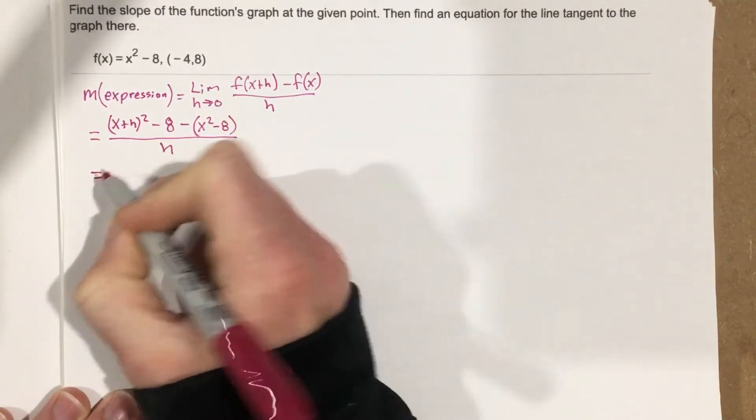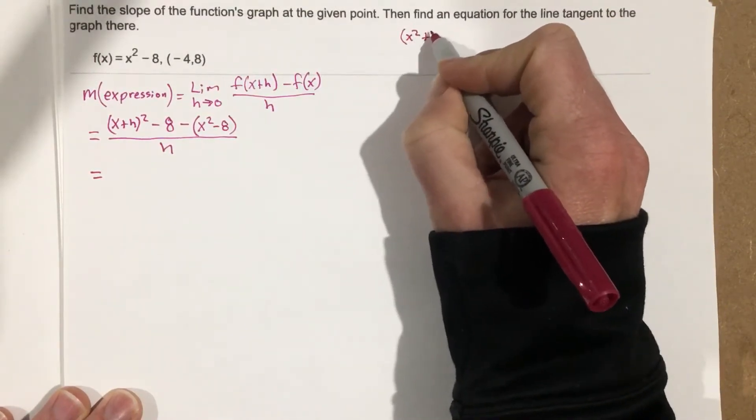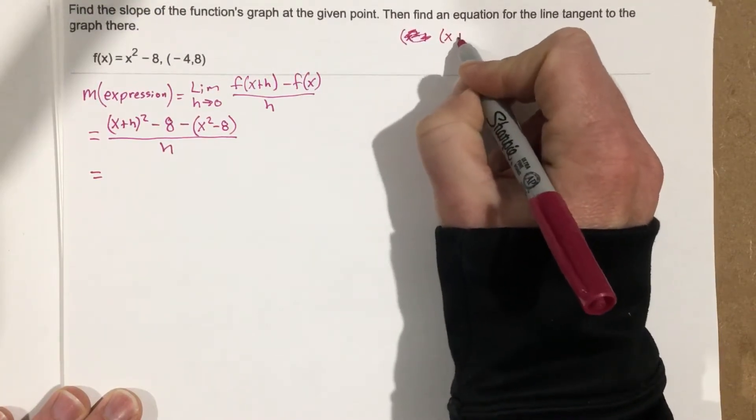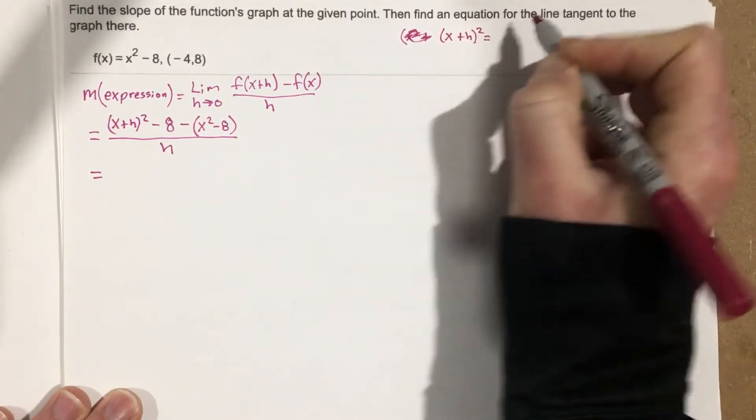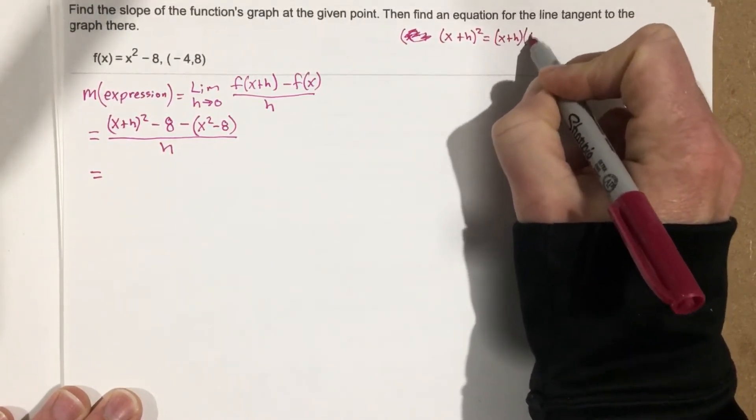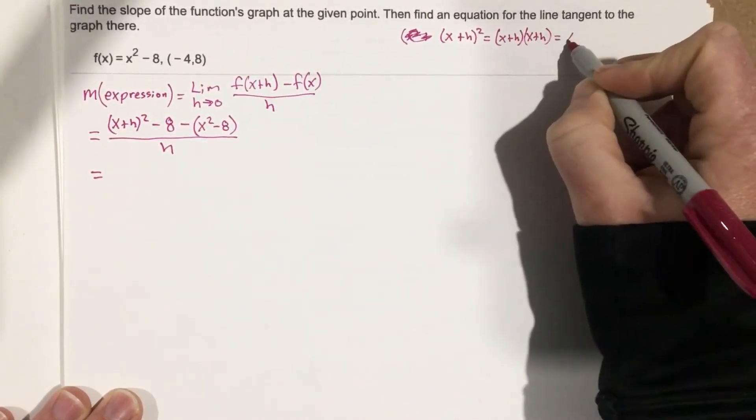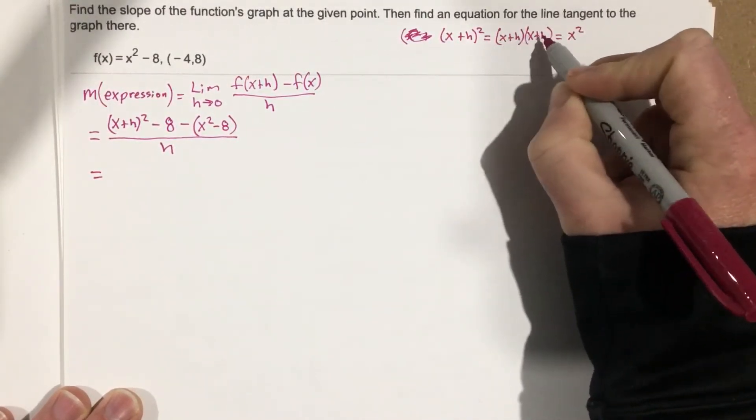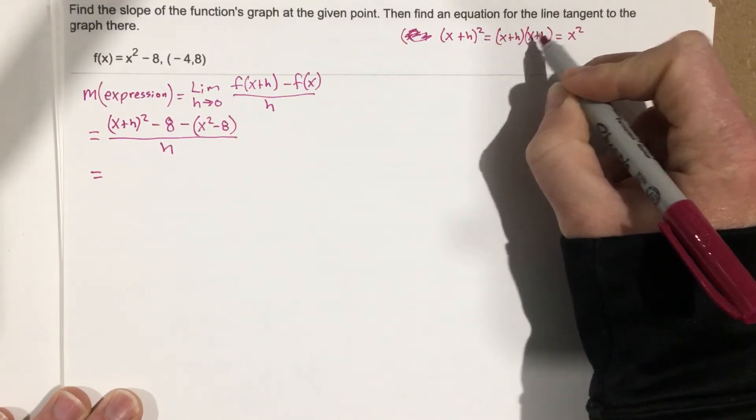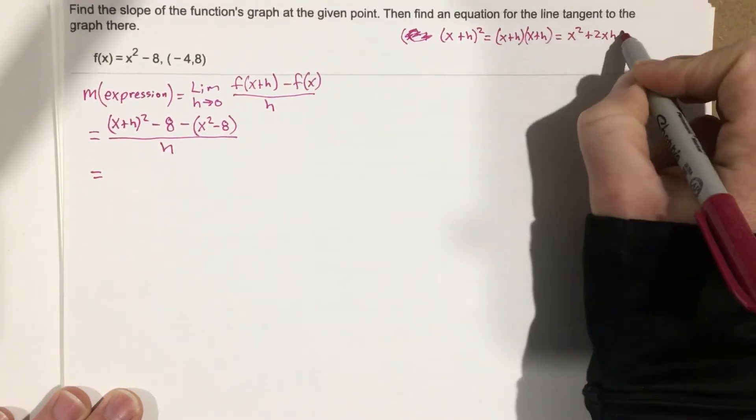Which is going to equal, let's go ahead and evaluate (x+h)². Well that's going to be (x+h) times (x+h), which will give you x times x which is x², x times h is xh, h times x is also xh so that's two of them, and then h times h which is h².